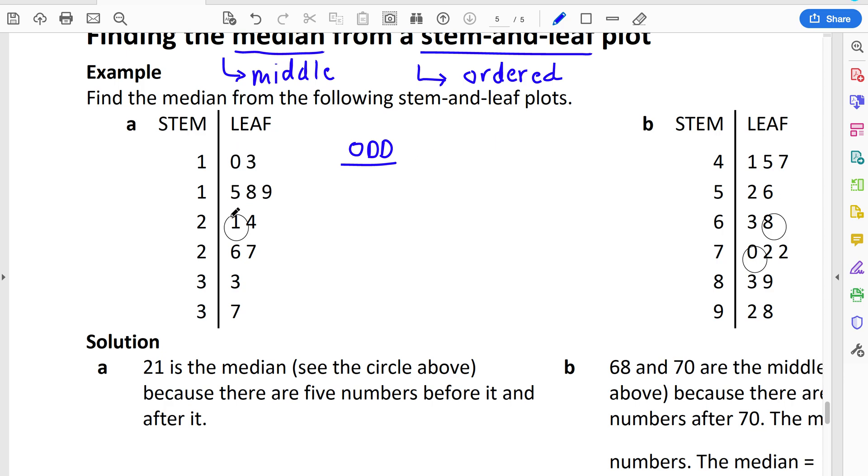So one, two, three, four, five, six, seven, eight, nine, ten, eleven values. Hence why I said it had an odd number.